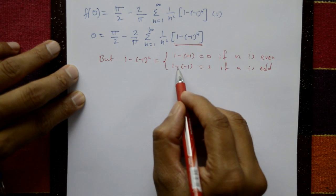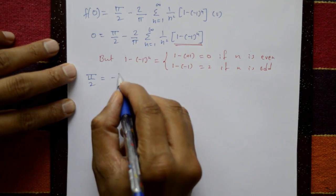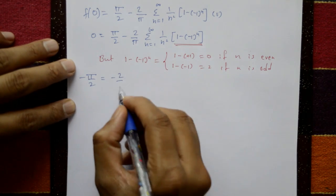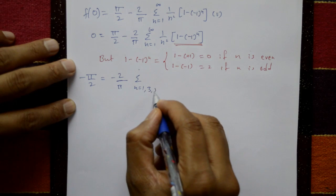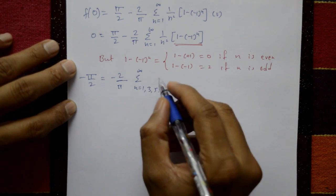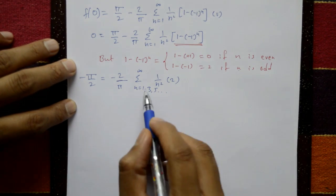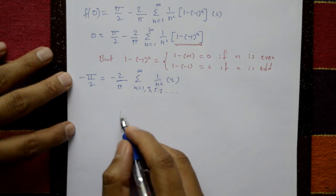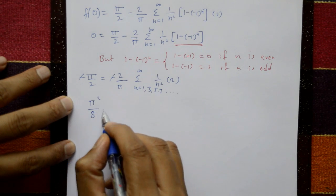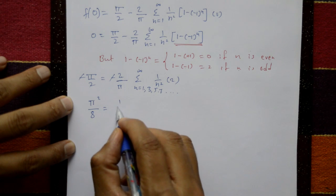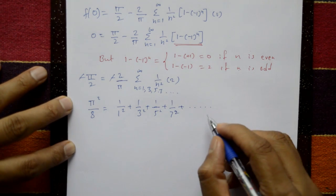Shifting to the left side: π/2 = (2/π) × summation over odd n = 1, 3, 5, ... of (1/n²) × 2. Cross-multiplying: π² = 8 × summation of 1/n² for odd n. Therefore π²/8 = 1/1² + 1/3² + 1/5² + 1/7² + ... and so on. This is the required series.